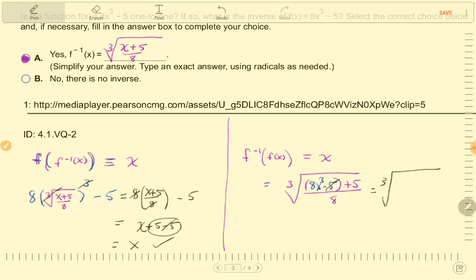We have the 5s cancel, so now I have 8x cubed over 8, then the 8s cancel, and then I have the cube root of x cubed, and the cube root cancels with the power of 3, and I have x. Success again.